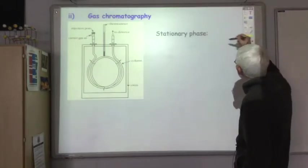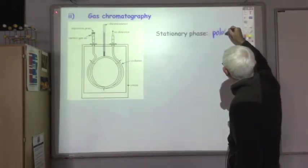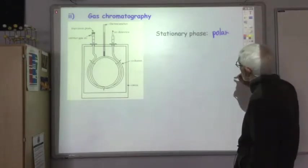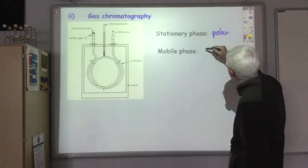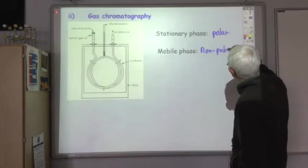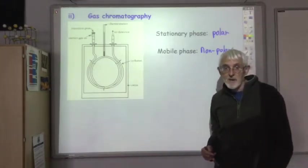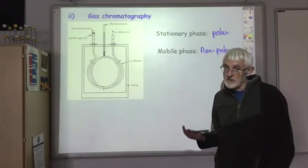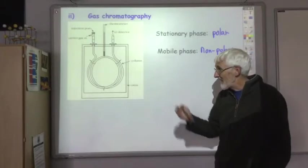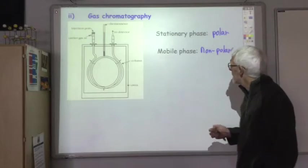The stationary phase is usually polar and the mobile phase, the gas which has been pumped through in gas chromatography, is usually non-polar. In fact, it's usually a noble gas like argon or helium, because not only is it very non-polar, but it's also totally unreactive and so won't react with the substances you're trying to detect.